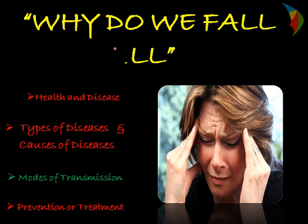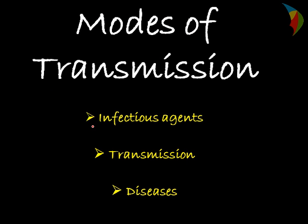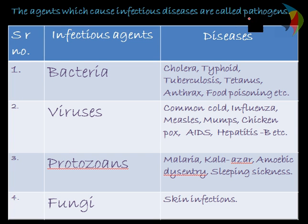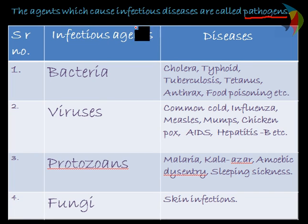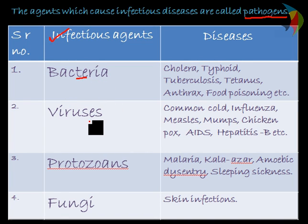Hello friends, now we'll cover the topic of modes of transmission. We'll go through what infectious agents are, how they are transmitted, and how they cause diseases. For this we need to understand first of all what are pathogens. Pathogens means the harmful microorganisms which cause various types of diseases, or the agents which cause infectious diseases.